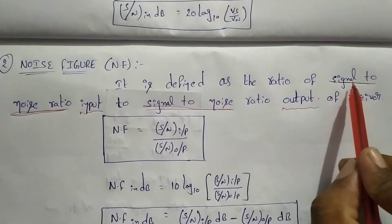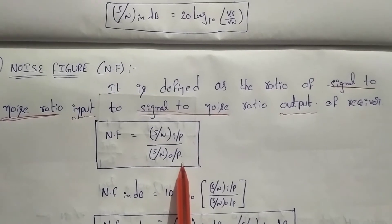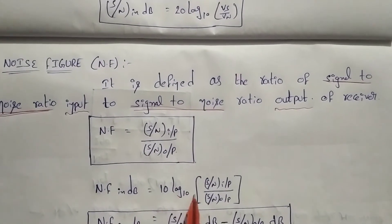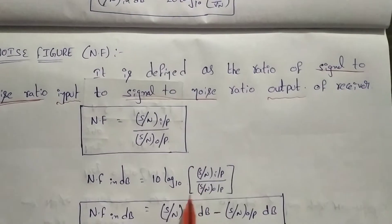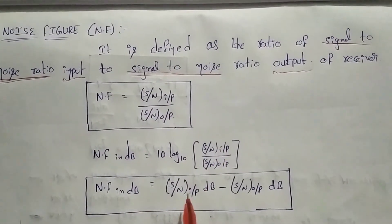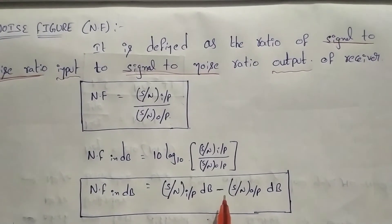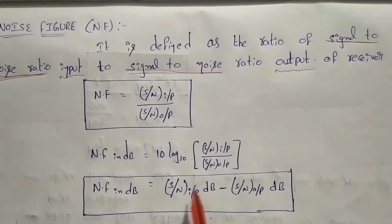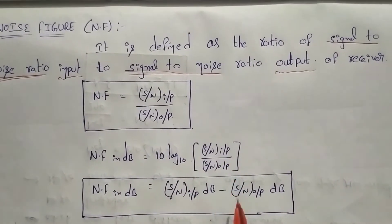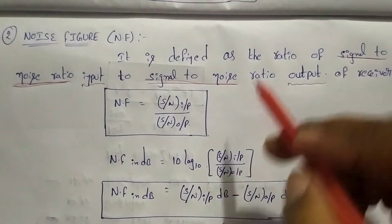So the noise figure is the ratio of signal-to-noise power at input to signal-to-noise power at output. In dB, using 10 log10 of a over b equals log a minus log b, the same formula is: Nf in dB equals signal-to-noise ratio at input minus signal-to-noise ratio at output.